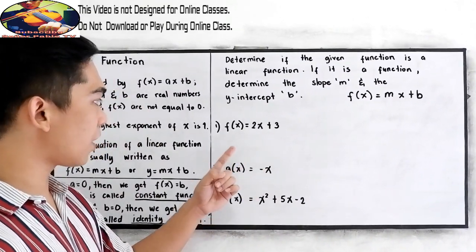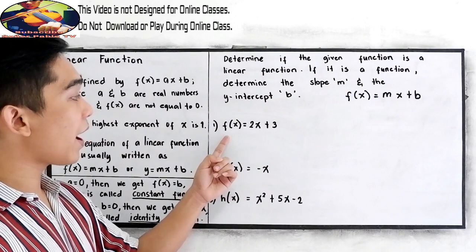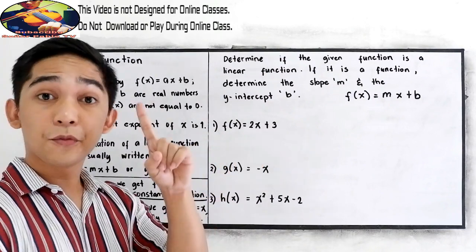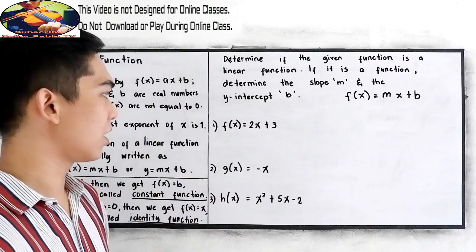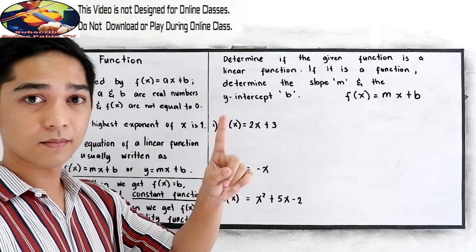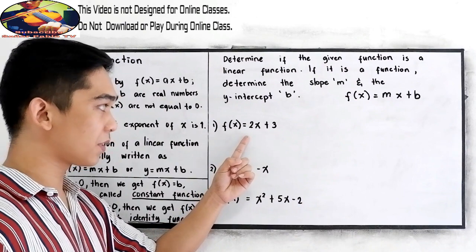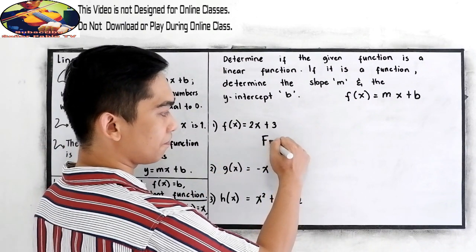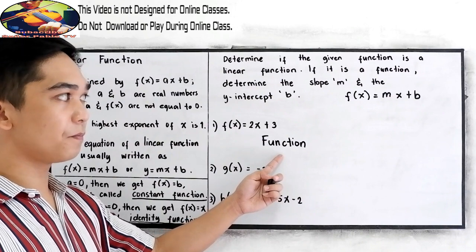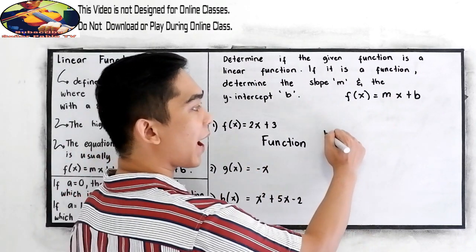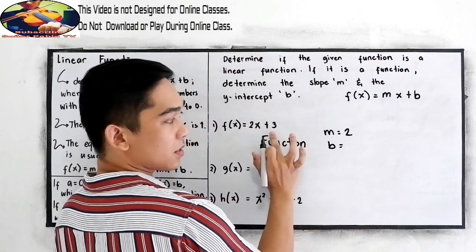Let's go to solve number 1. For number 1, f of x is equal to 2x plus 1. First step, check the exponent or the degree. Our degree is 1 — that is our condition — so number 1 is a linear function. Now determine m, the slope, and the y-intercept. Our m is positive 2 and our b is positive 1.